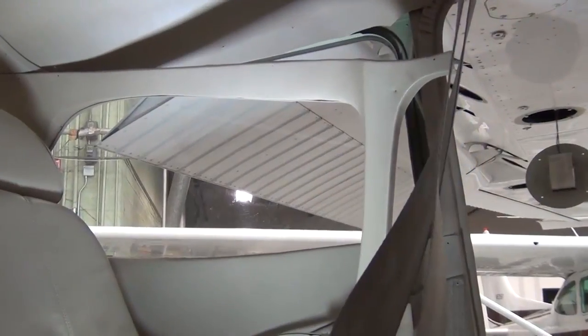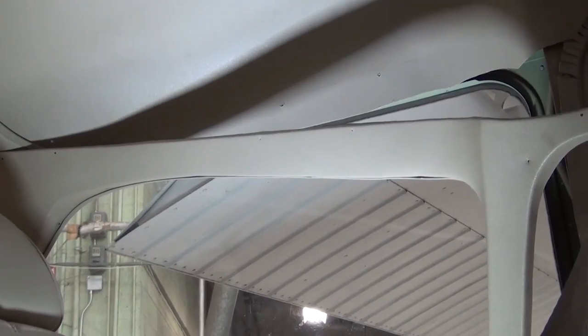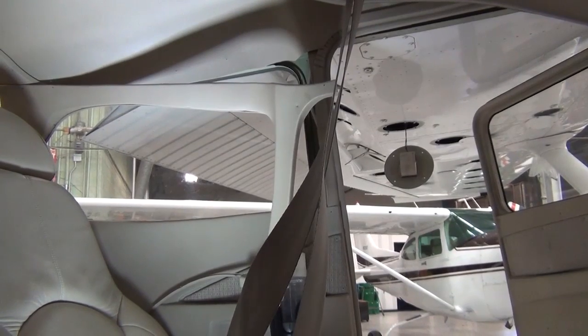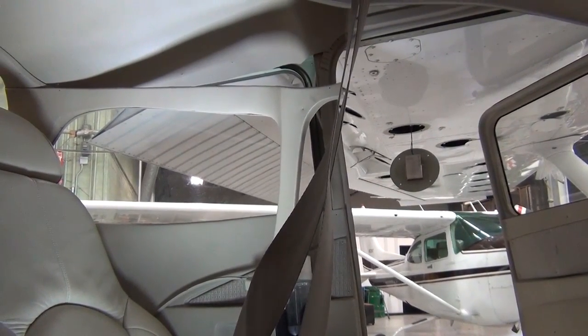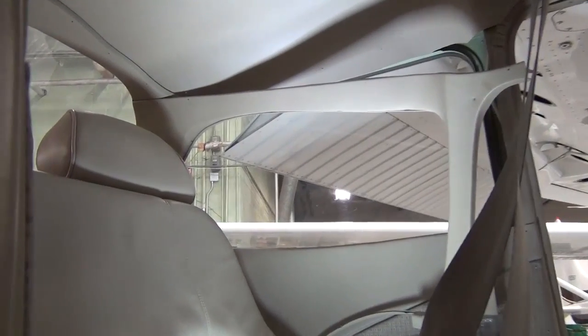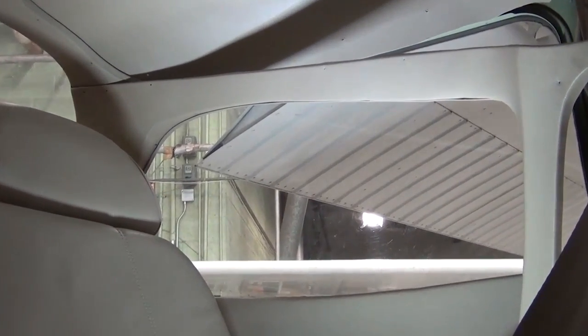To properly inspect the control cables, all sections of the cable must be inspected, including the sections hidden behind structure, pulleys, or interior furnishings. Take the time to remove what is necessary to gain adequate clearance for a thorough inspection of the control cables.